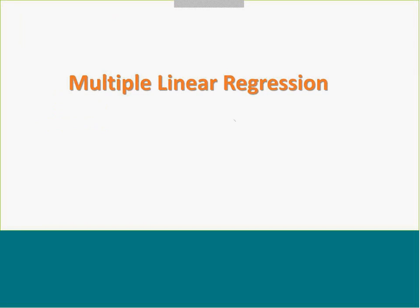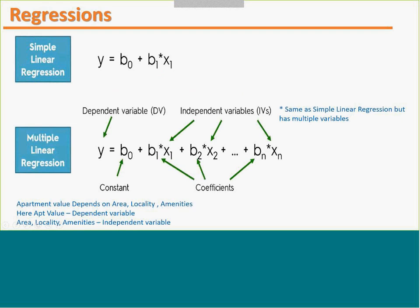We have seen simple linear regression, and there is another type called multiple linear regression. The formula y = b0 + b1*x1 is used when you have only one variable. But if you have many independent variables — for example, calculating apartment value which depends on area, locality, and amenities — you should go for multiple linear regression. The apartment value is the dependent variable while area, locality, and amenities are independent variables.